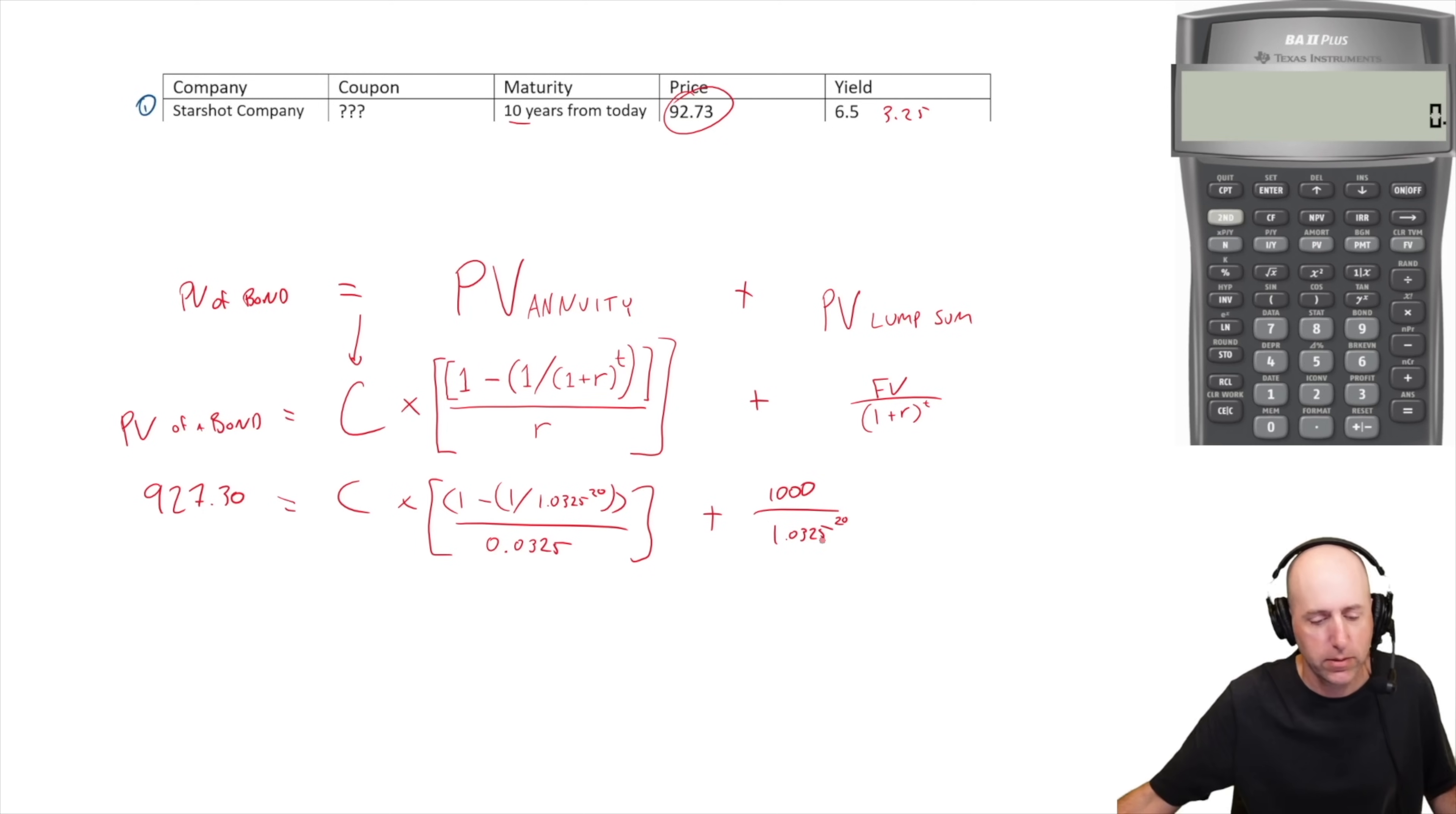I'm gonna solve for what's in the brackets. 1.0325 to the power of 20 equals 1.8951. One over that is 0.5275. One minus that equals 0.4725, divided by 0.0325, I get 14.54. So 14.54, C times 14.54 plus $1000 divided by 1.0325 to the power of 20.